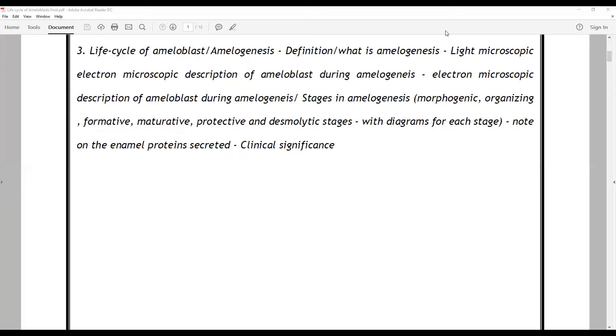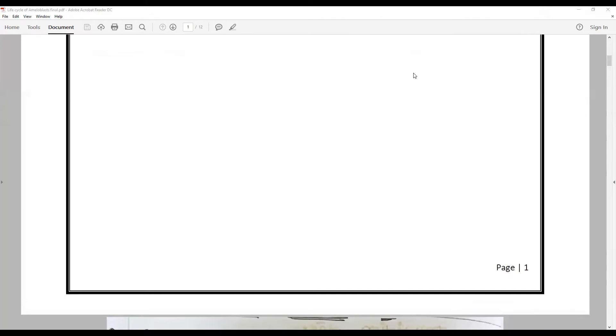Amelogenesis is the process of enamel secretion, how things change. We will limit our discussion today on life cycle of ameloblast. We will say what is amelogenesis, how the ameloblasts change, the different stages, and note on the enamel protein secreted and clinical significance.